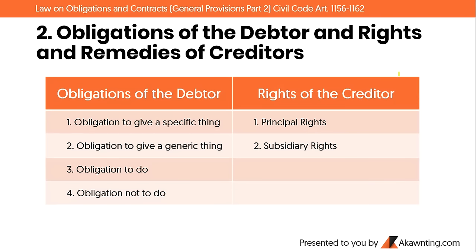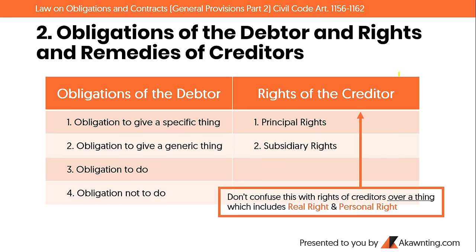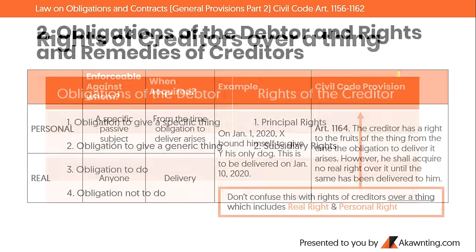Moving to the obligations of the debtor and the rights and remedies of the creditor. The debtor's obligations are categorized according to the different types of obligations by prestation. The creditor's rights are categorized into two: principal rights or remedies, and subsidiary rights or remedies. Note: do not confuse these with the rights of creditors over a thing, which include real rights and personal rights.